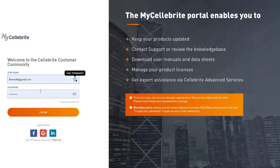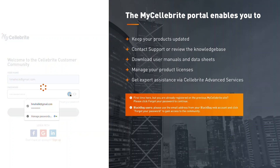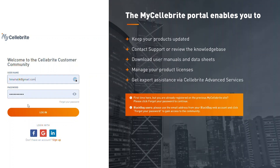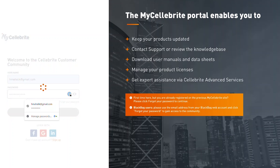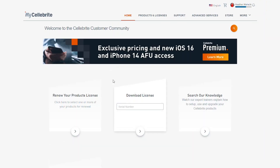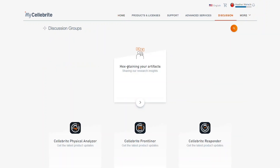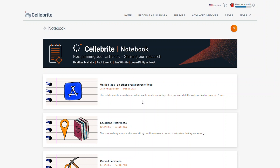Another way you can do it is go straight to your community portal and log in. You'll no longer see it as the splash banner — the splash banner gets updated by marketing as something new is coming out in our products and solutions. Here you can see it's advertising Premium. The way you're going to find it now is go to Discussion, and it will be listed as "Hexplaining Your Artifacts." This top one is the notebook — it's sharing our research insights. When you click on it, you land on the exact same place.